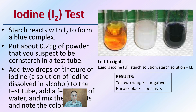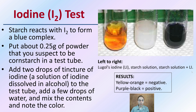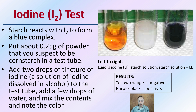We have the iodine test. Starches react with iodine to form a blue complex. Add about a quarter gram of the powder suspected to be cornstarch to a test tube, then add two drops of a tincture of iodine — a solution of iodine dissolved in alcohol — plus a few drops of water. Mix and note the color: a yellow-orange result is negative, while a purple-black result is a positive test.